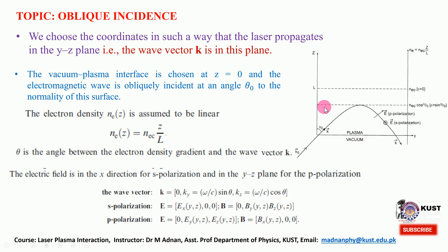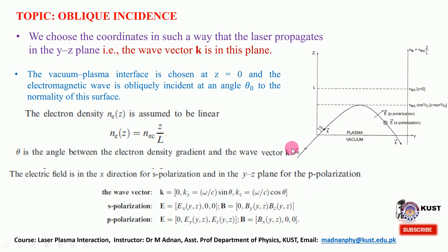For s-polarization the electric field has an x component but propagates through the medium in the y-z plane. That electric field of the incoming electromagnetic wave incident on this inhomogeneous plasma will depend upon the y and z coordinates. For p-polarization the electric field will be in the y-z plane while the magnetic field will be perpendicular to the plane of the plasma slab.